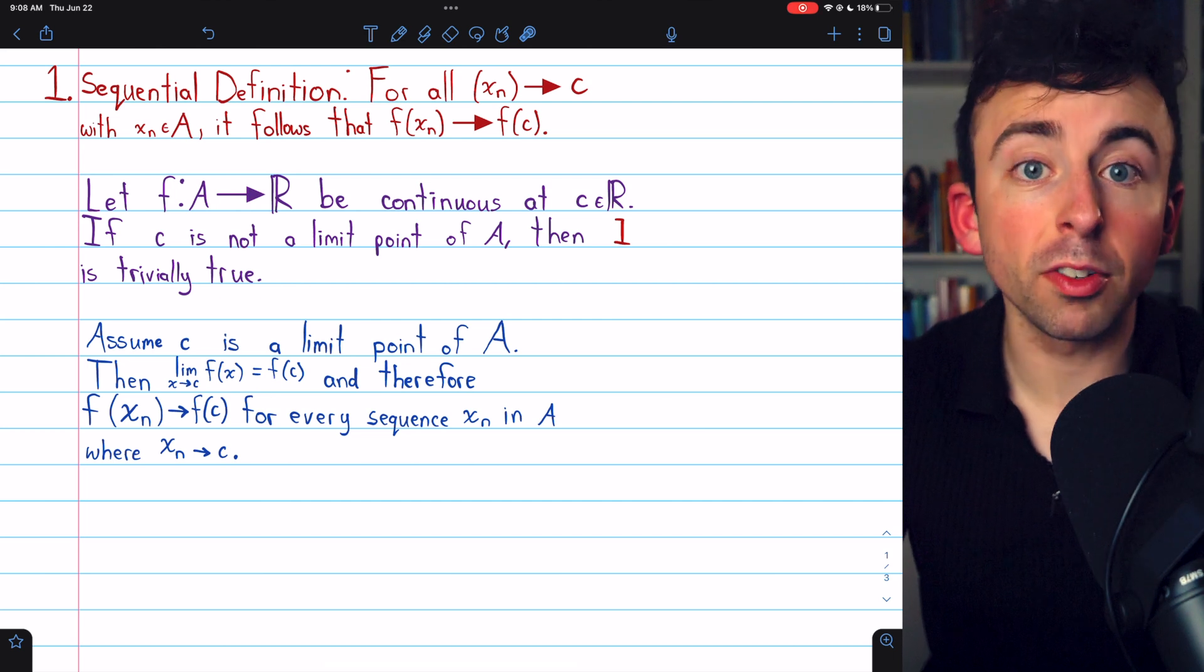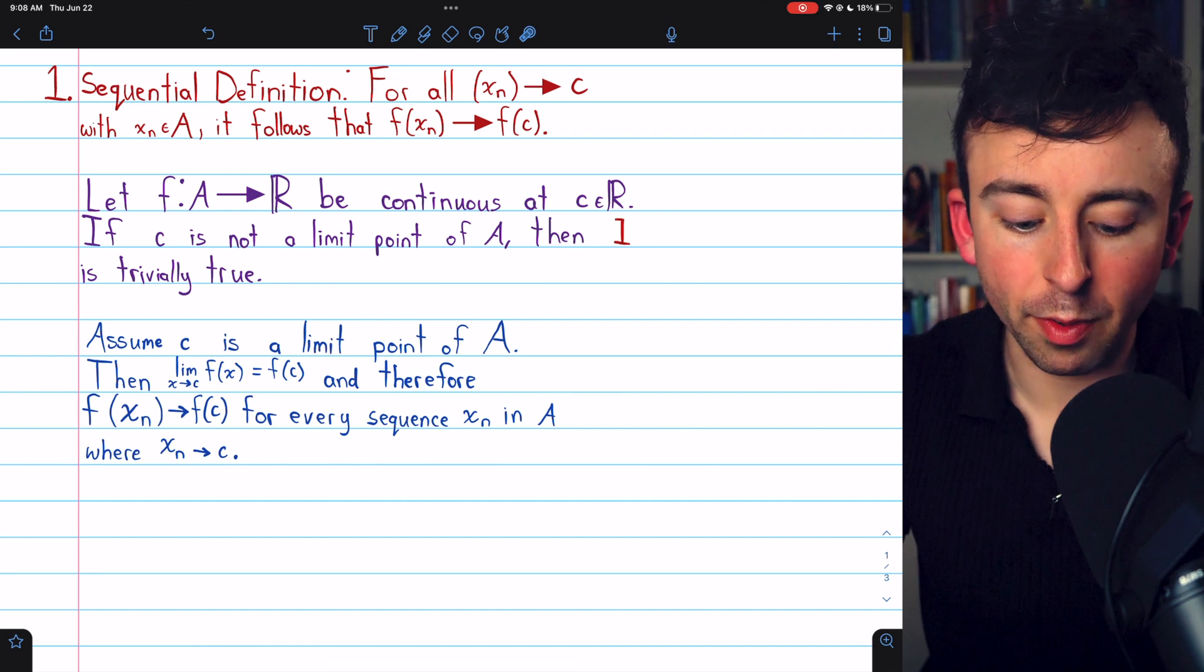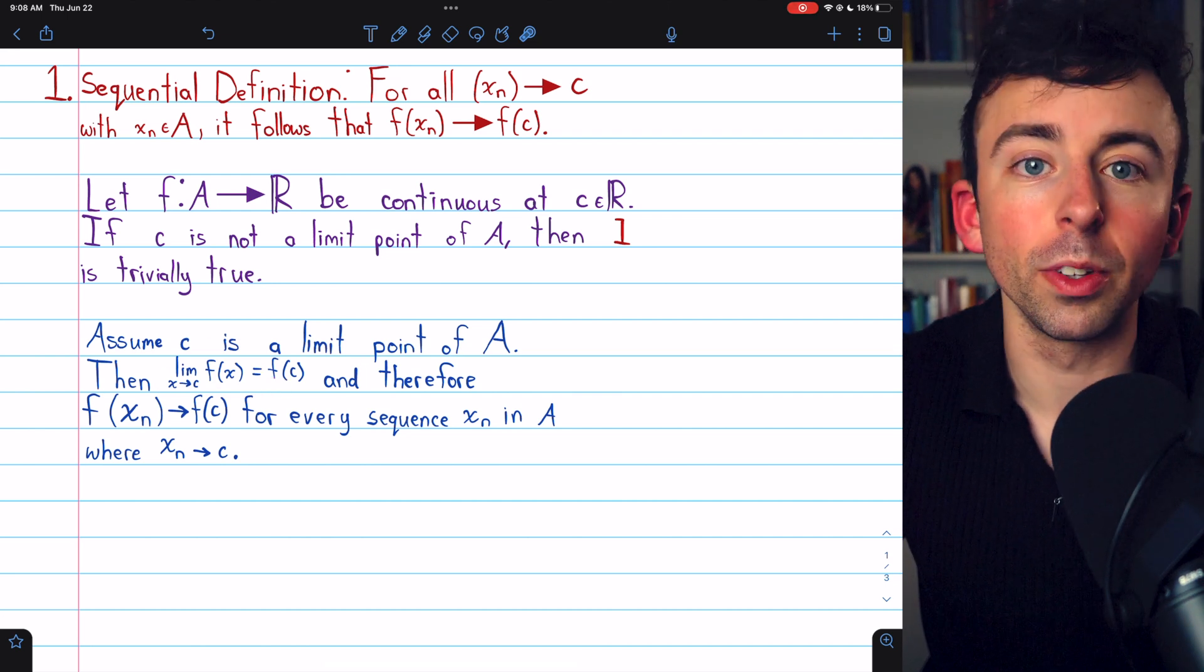Again, the key to the argument is just our previous result that says this sequence stuff is true if the limit of f of x as x approaches c equals f of c.